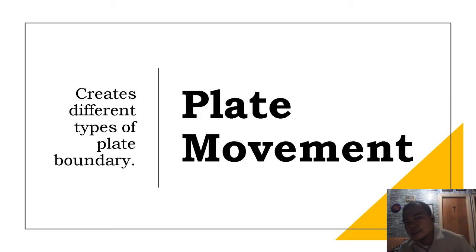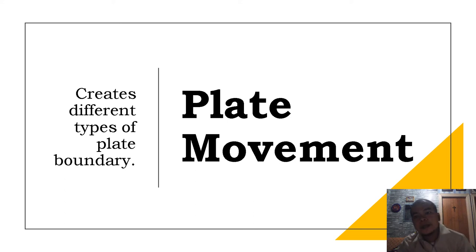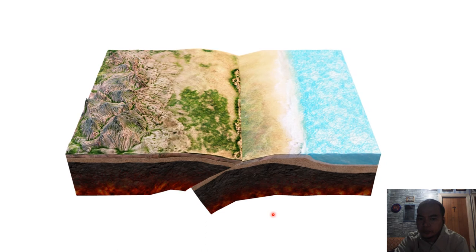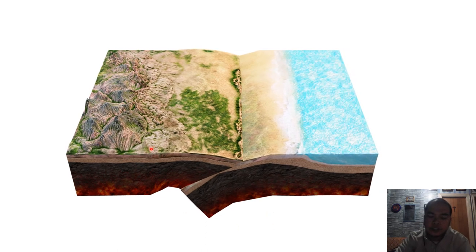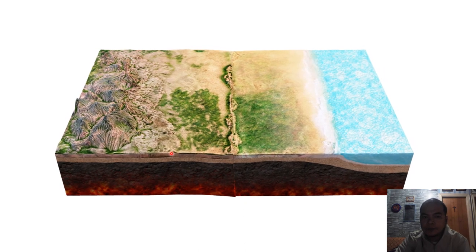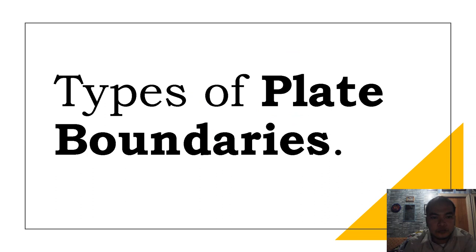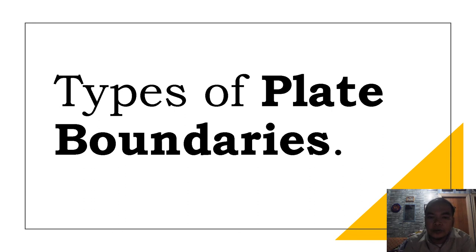The type of plate boundary is determined by plate movement — how the plate moves within those boundaries determines its type. In this animation, it shows a specific type of plate boundary where one plate moves toward the other. This lesson will focus on the types of plate boundaries, their characteristics, and the geologic formations that each boundary forms.